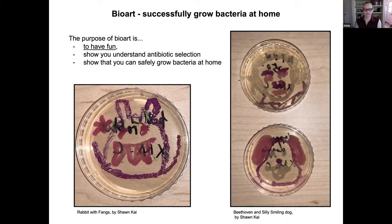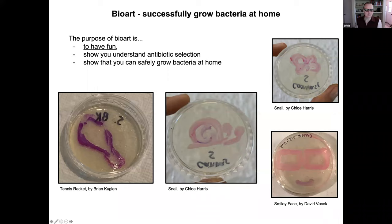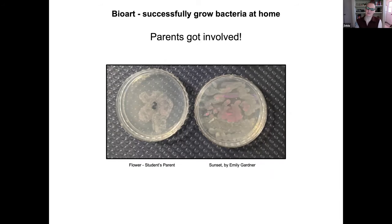Part of the experiment involved bio art — also called the canvas kit. Students used bacteria expressing different color pigments to create artwork: a rabbit with fangs, a reference to Beethoven, a silly smiling dog, a tennis racket, a snail, and a flower. This was fun but also demonstrated that students could grow bacteria safely at home and understood antibiotic selection.